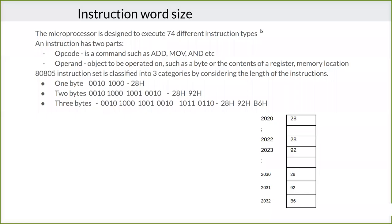In this video we are going to see the instruction size in microprocessor 8085. Based on the size of the instruction, there are three types: one-byte instruction, two-byte instruction, and three-byte instruction.